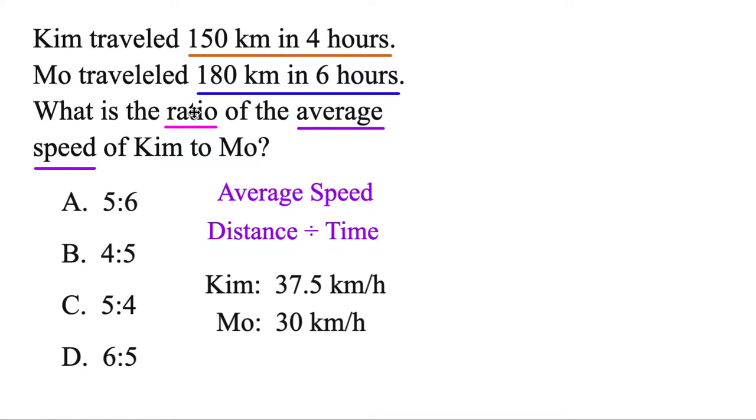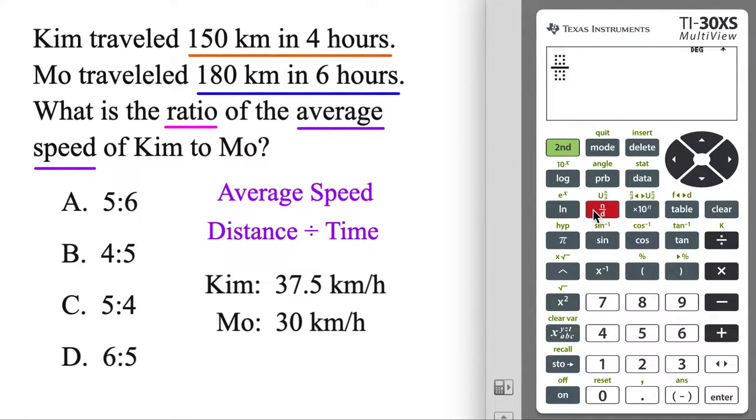And finally, we want the ratio of Kim to Mo. So we'll go ahead and put that value up top, that in the bottom. Let's do it. We'll do our fraction, 37.5 over 30, and 1.25. But if you hit the button right above enter, it'll convert it. So the ratio, 5 to 4. Same thing as C, 5 to 4 there.